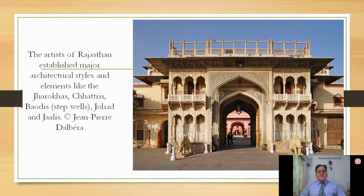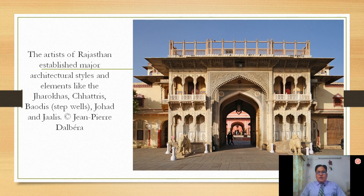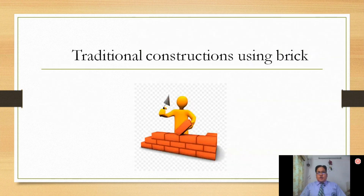You will observe Jarokas — small windows — in the photographs. There are two benefits of these small windows: they protect from exterior weathering effects, and they were used in old palaces from where ladies could see the outside easily while outsiders could not see what was happening inside. So a one-way view is provided by this small type of window. These are the beauties of stone construction.